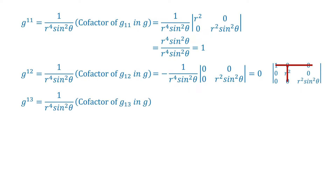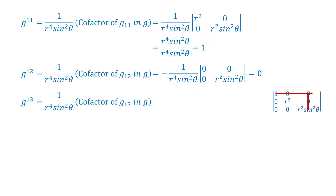g^13 equals 1 by r to the power 4 sin square theta, into the co-factor of g13 in g, which equals 1 by r to the power 4 sin square theta, into the determinant of: 0, r square; 0, 0 — which is equal to 0.